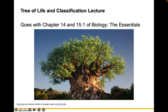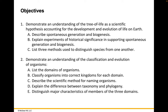Welcome to our lecture on the Tree of Life and the Classification of Living Things. This goes along with chapters 14 and 15.1 of Biology of the Essentials by Huffnagle. Our objectives are to demonstrate an understanding of the Tree of Life as a scientific hypothesis, accounting for the development and evolution of life on Earth, describe spontaneous generation and biogenesis, explain experiments of historical significance, and list three methods used to distinguish species from one another.